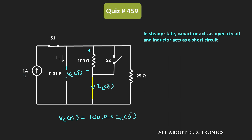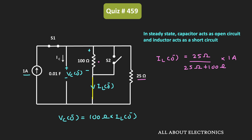IL(0⁻) can be found using the current divider rule, because the 1 ampere current is divided between the 100 ohm resistor and the 25 ohm resistor. Using the current divider rule, IL(0⁻) equals 25 ohms divided by (25 ohms plus 100 ohms) times 1 ampere — where 25 ohms is the resistor in the opposite arm. This gives IL(0⁻) equal to 1/5 ampere, or 0.2 ampere.